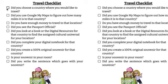The first thing you've got to decide is which country you're going to travel to. Once you've made that decision, type it right here — I'm going to say China — then cross it off. Use Google My Maps to figure out how many miles it is to that country from your current location. Find the ruler tool and measure from where you are to China.